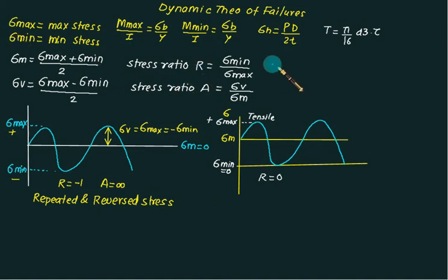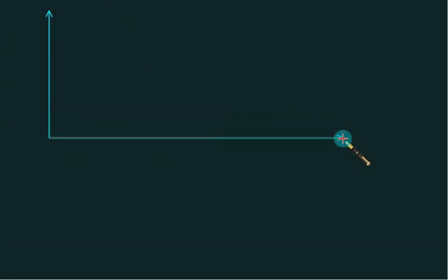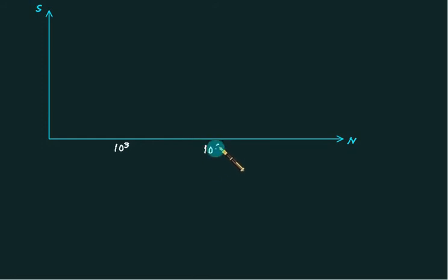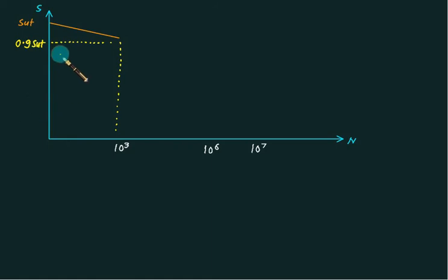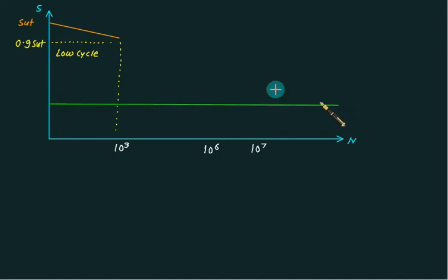Whenever they ask you the stress ratio, prefer the first formula, R = sigma_mean / sigma_max. Now, for the S-N curve: on the X axis we plot the number of cycles, and on the Y axis we plot the fatigue stress. This is a log-log plot. Up to 10³ cycles is called low cycle fatigue; from 10³ to 10⁶ is called finite life; and beyond 10⁷ it is called infinite life. The graph starts at 0.9 × SUT at 10³ cycles.